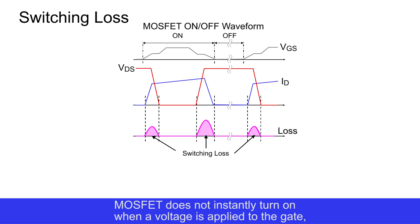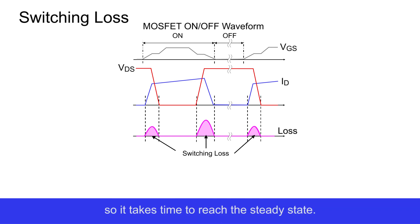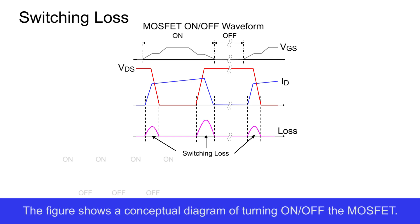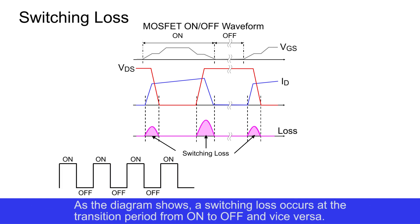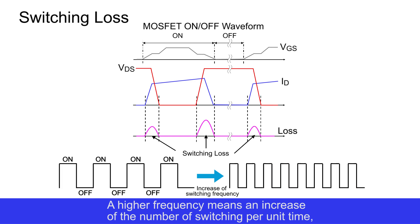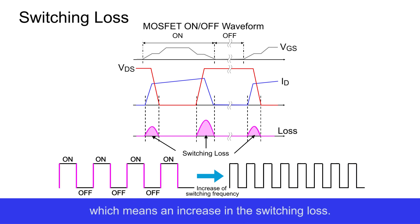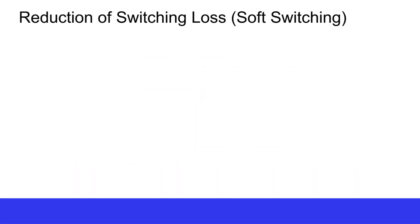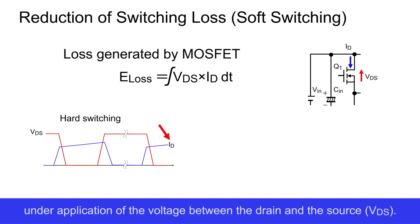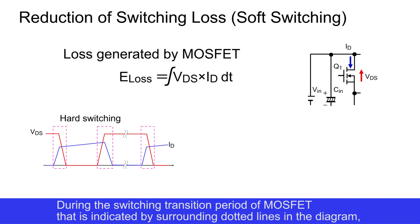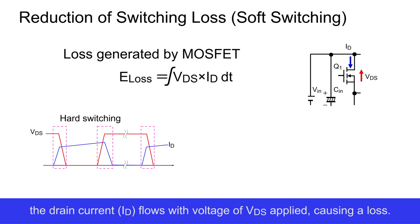MOSFETs do not instantly turn on when a voltage is applied to the gate, so it takes time to reach the steady state. A switching loss occurs at the transition period from on to off and vice versa. A higher frequency means an increase in the number of switchings per unit time, which means an increase in the switching loss. A loss in the MOSFET is generated because of the flow of the drain current ID under application of the voltage between the drain and source VDS. During the switching transition period, the drain current ID flows with voltage VDS applied, causing a loss.